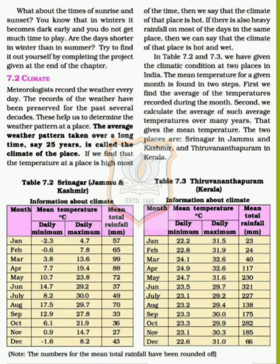The average weather pattern taken over a long time, say 25 years, is called the climate of the place. So the average pattern, which is the weather over 25 years, is used to determine the climate of that place.